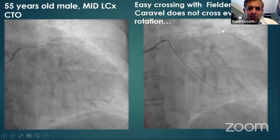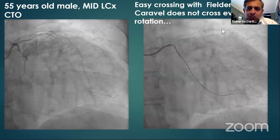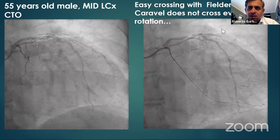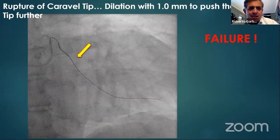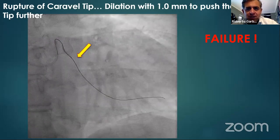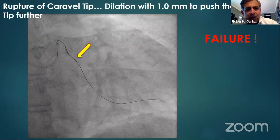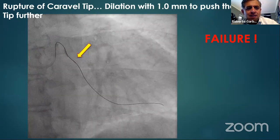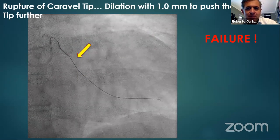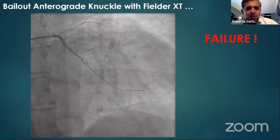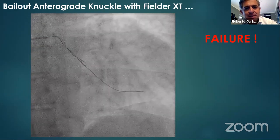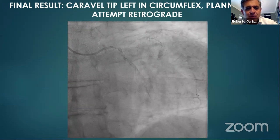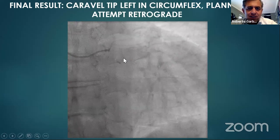Another case: circumflex occlusion, crossed easily with a Filerwire and Caravan microcatheter used antegradely, but the Caravan wouldn't cross the lesion. The operator rotated the Caravan to advance it, resulting in rupture of the tip — visible as a completely wrapped tip detached from the microcatheter. A balloon was placed to push the tip further, but failed. A knuckle bail-out was attempted to go alongside the tip, also failed, and the procedure was stopped with the Caravan tip remaining in the artery.